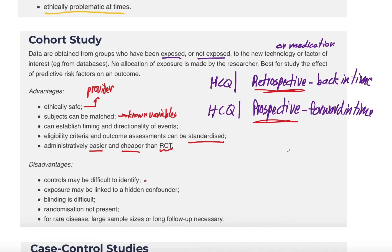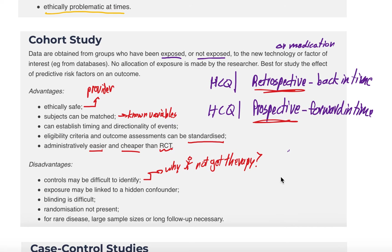Disadvantages of cohort studies: controls may be difficult to identify if a treatment is thought to be effective. There may also be hidden confounders — why didn't the patients who didn't receive the treatment get it? The fact that they didn't get it means they may be different from those who did. Blinding can be difficult. You can match for known variables but not unknown or hidden variables. Since you can't randomize by the nature of the study, and for rare diseases a large sample size or long follow-up may be necessary.